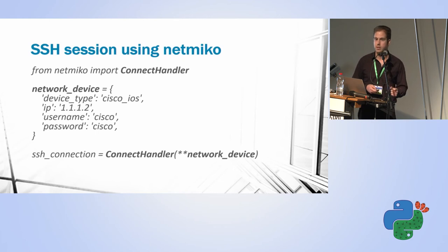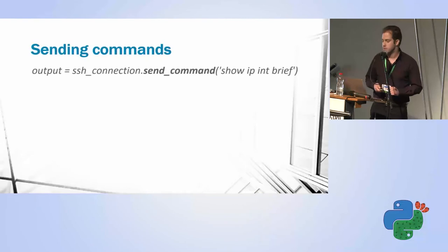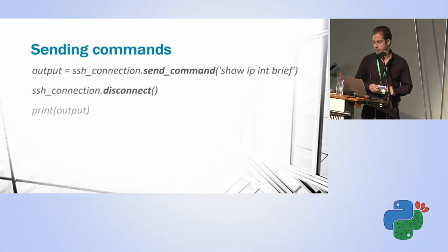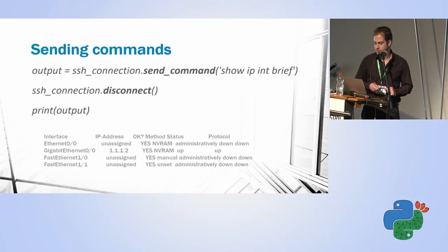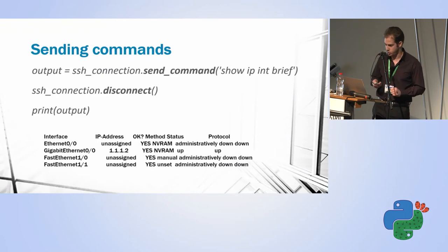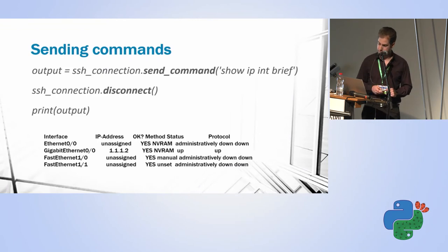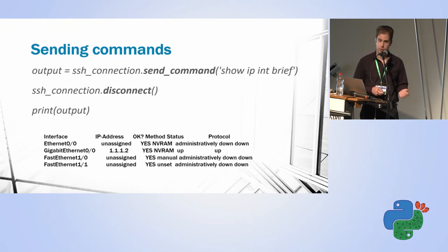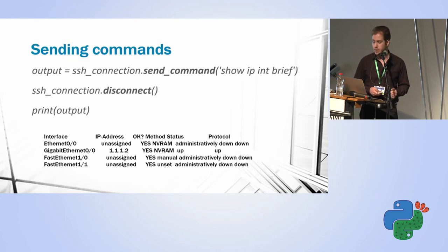NetMiko knows when an output is an error. I send the command and get back the output — for example, sending 'show IP interface brief', which tells the router to show all interfaces with their configuration, and I get that output.